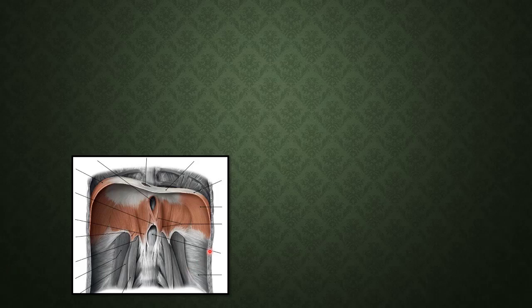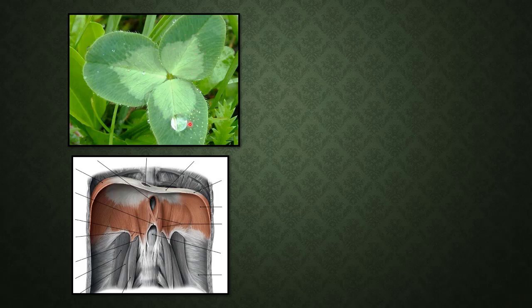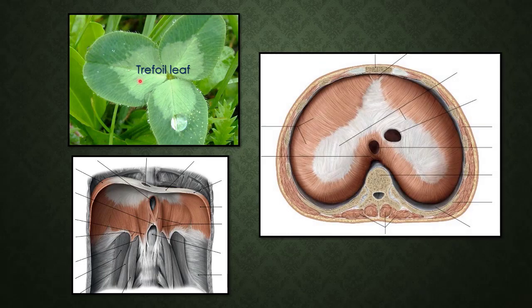The converging fibers from the periphery insert into a leaf-shaped central tendon. This central tendon has three leaflets, so it is called a trefoil leaf - with an anterior leaflet, right lateral leaflet, and left lateral leaflet. The white fibrous central tendon is mostly aponeurotic. In between the junction of the anterior and right leaflets we find the opening of the inferior vena cava, just to the right of the midline, located within the central tendon.